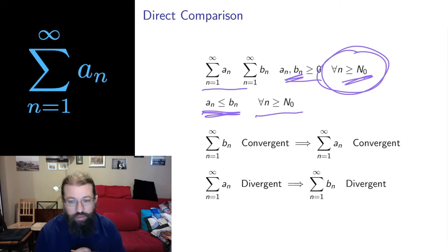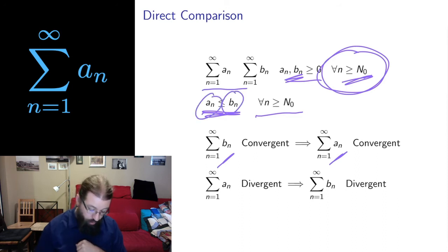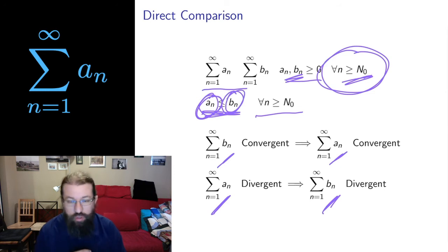Then we have two direct comparison results. If the larger series is convergent, then the smaller series is convergent. That makes sense. If these things add up to a finite number and we have smaller positive numbers, they'll also add up to a finite number. And if the smaller series is divergent, then the larger series has to be divergent as well. Hopefully that also makes sense. If these smaller things add up to infinity, then these larger things certainly add up to infinity as well. And those are the only two comparisons we can make.